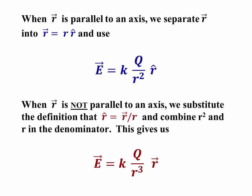We're going to use that original equation, kq over r squared r hat, whenever we've got the r vector parallel to an axis, because then we can simply separate the magnitude and direction of that vector. When r vector is not parallel to an axis, we're going to substitute for r hat its definition r vector over r. When we collect terms, this gives us kq over r cubed r vector.